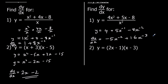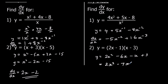For question two, we need to expand the brackets first. 2x times x is 2x squared, 2x times negative 3 is negative 6x, negative 1 times x is negative x, and negative 1 times negative 3 is positive 3. Collecting like terms gives us 2x squared minus 7x plus 3. Now we can differentiate: dy/dx — 2x squared becomes 4x (times by the power, take one off the power), and negative 7x is a straight line with a gradient of negative 7. The 3 is a horizontal line with no gradient.